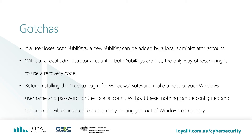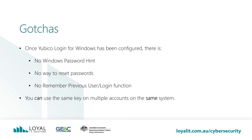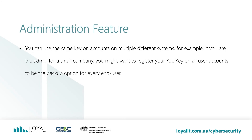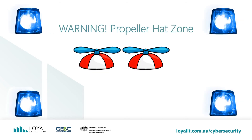Before installing the YubiKey Login for Windows software, make a note of your Windows username and password for the local account. Without these, nothing can be configured and the account will be inaccessible, essentially locking you out of Windows completely. This is the most important step — make sure you know your credentials before installing the software. If you don't do this, you may be forced to reinstall Windows from scratch. Once YubiKey Login for Windows has been configured, there is no Windows password hint, no way to reset passwords, no Remember Previous User login function. You'll be typing your username and password in each time you log into the computer. You can use the same key on multiple accounts on the same system, and on accounts on multiple different systems too. For example, if you are the admin of a small company, you might want to register your YubiKey on all user accounts to be the backup option for every end user.